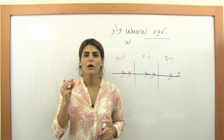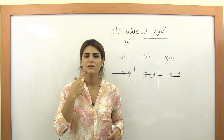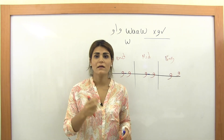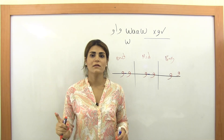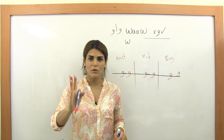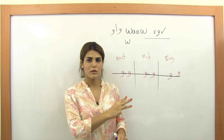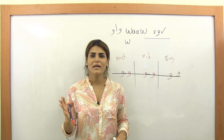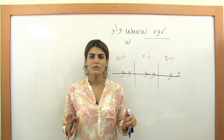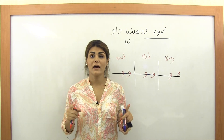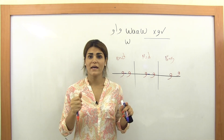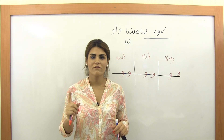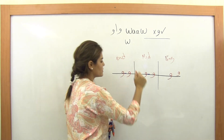Letter Waw is pronounced as in 'what' or 'we' or 'with.' Like Ya, it plays two roles: one as a consonant and one as a long vowel. We will learn the long vowel in a separate lesson. For now we are learning Waw as a consonant. So far we have learned six letters — two of them, Ya and Waw, have dual roles as consonant and long vowel — plus one big family that shares one basic shape.